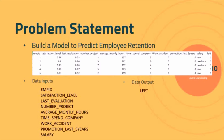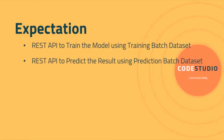The input data points include satisfaction level, last evaluation, number of projects, work accident, promotion in the last five years, and salary. The output variable used to train the model is called 'left' — value 1 means the employee left, and 0 means still continuing. The client expectations are: first, a REST API to train the model using a training batch dataset whenever needed; and second, a REST API to predict results for multiple employees at once using a prediction batch set.